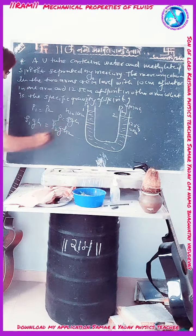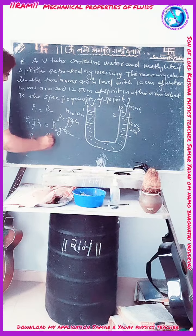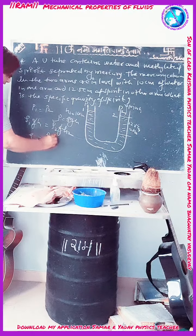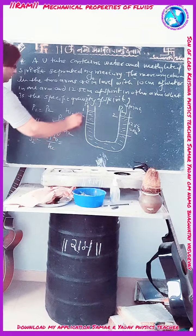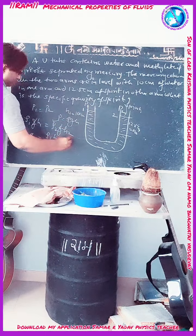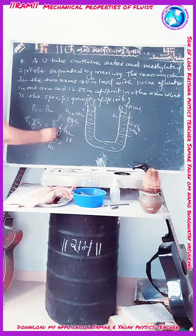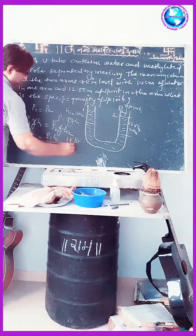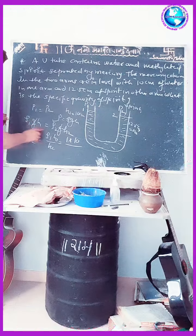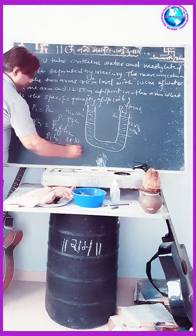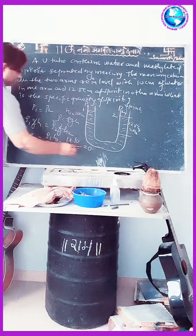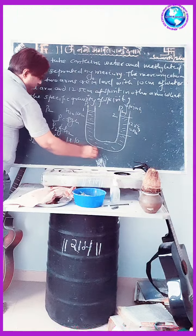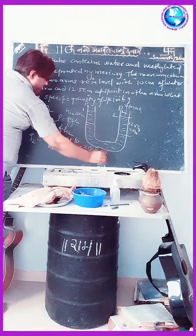From this we get rho2 equals rho1 times H1 divided by H2. The G cancels out. The density of water rho1 is 1 gram per centimeter cube. So rho2 equals 1 times H1, which is 10 cm, divided by H2, which is 12.5 cm. So we get rho2 equals 0.8 gram per centimeter cube.